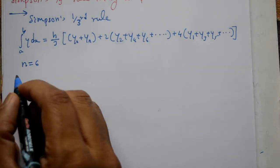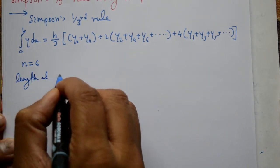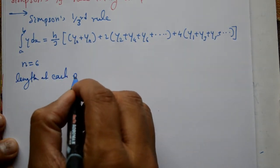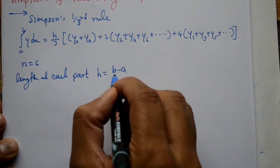Now first, the step size. The length of each part: h is equal to b minus a divided by n.